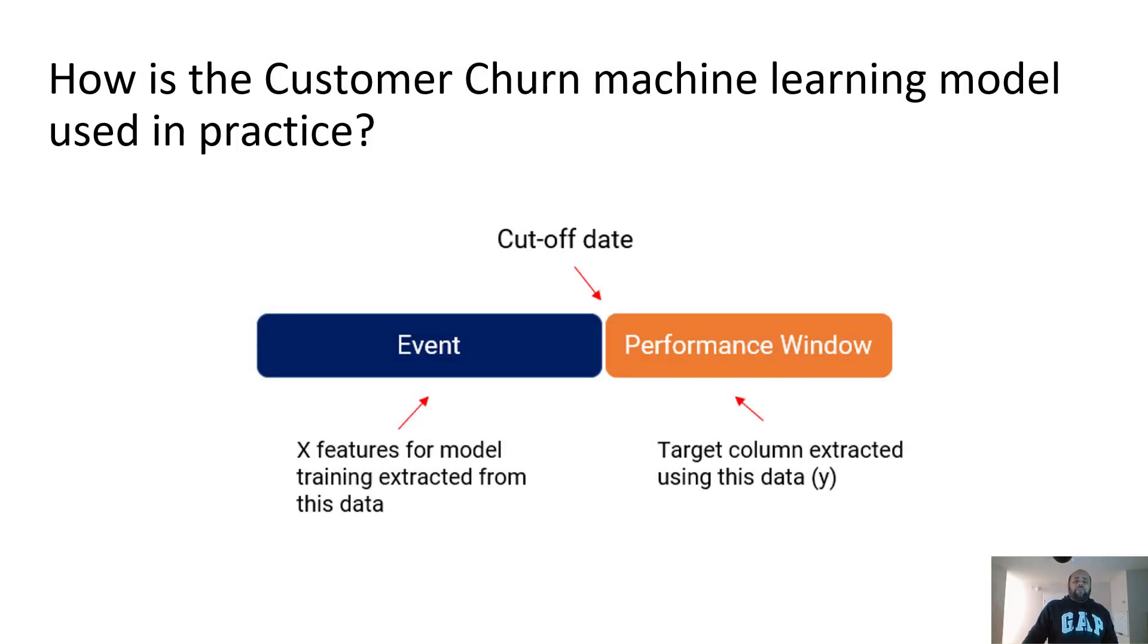Something to be careful about in machine learning or churn related projects is you have two things: you have event and you have performance window. Event is basically the time period using which you are training your model. Because when you're predicting churn, you want to take care of the time lag. You at least have to predict one month in advance, two or three or four months in advance, depending on business use case. But the point here is you have to predict it in advance. So there has to be a lagging time period, because you want to predict in advance so that the company or customer retention team has time to intervene and stop the churn.